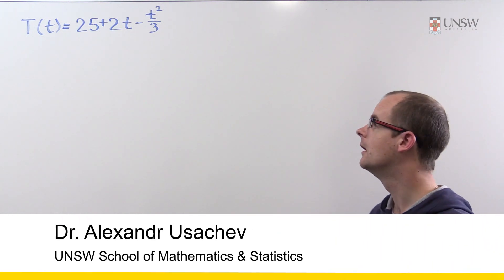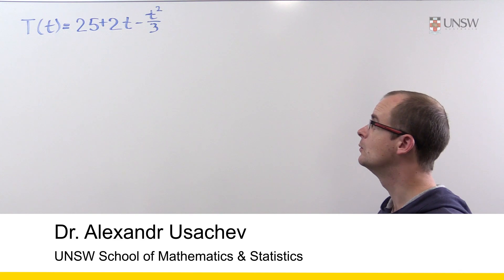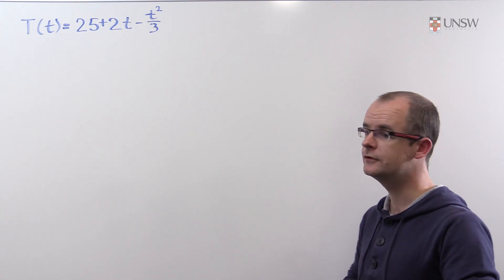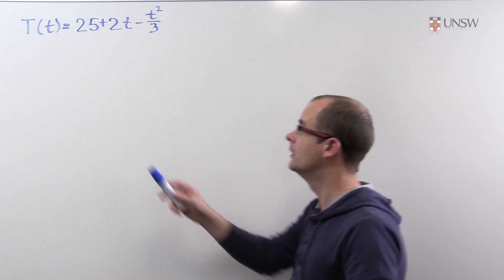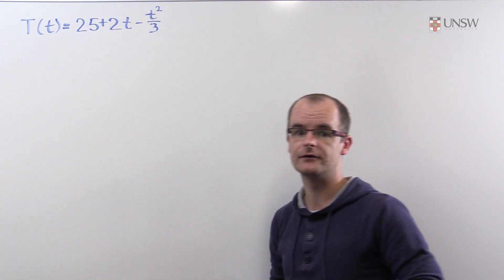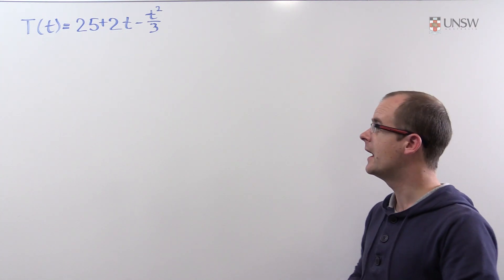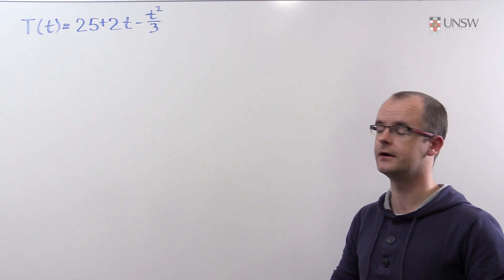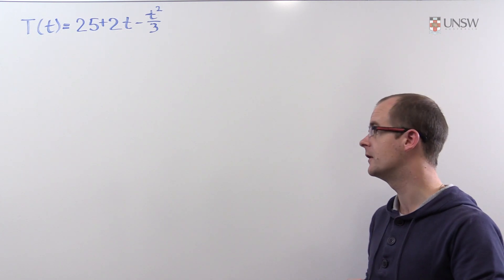Hello. In this problem we are given the function capital T, which describes the air temperature in degrees Celsius T hours after noon. So little t stands for hours after noon. And we are asked to find the average air temperature between noon and 5pm.